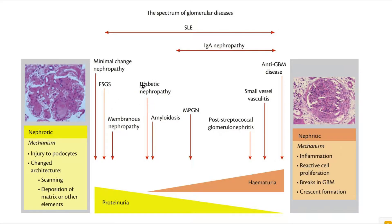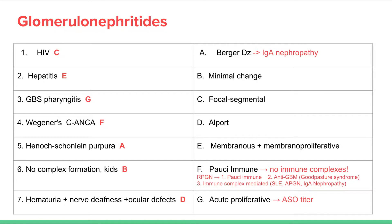Minimal change, membranous, diabetic, amyloidosis, and focal segmental tend to be more on the nephrotic side. Membranoproliferative tends to be in the middle. HIV is associated with focal segmental glomerulonephritis, which is mostly nephrotic. Hepatitis is associated with membranous and membranoproliferative — again mostly nephrotic.